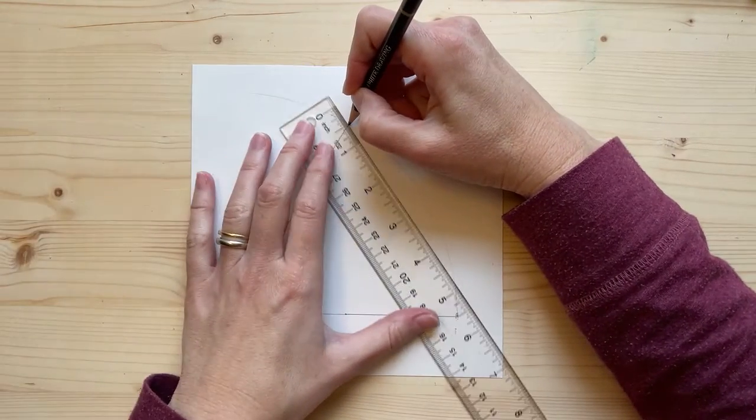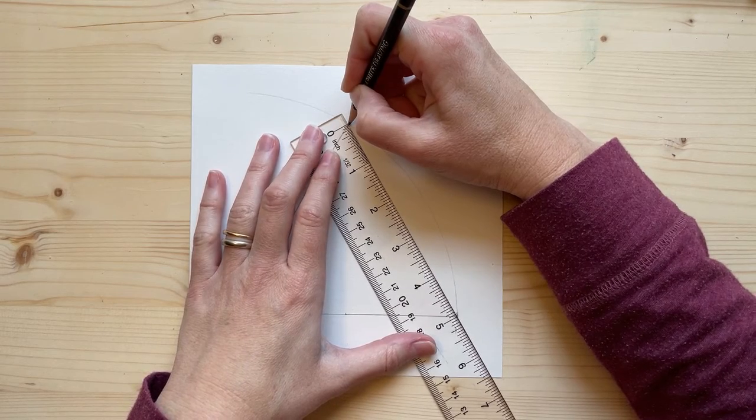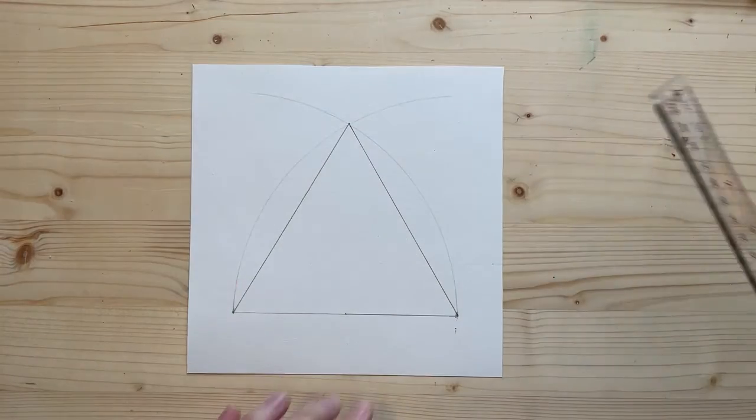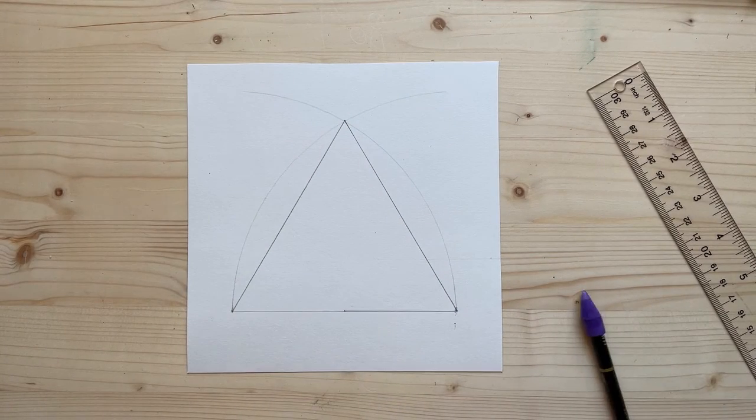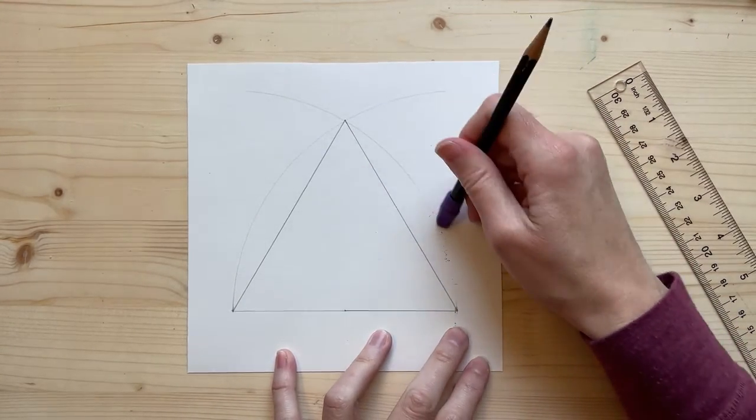So then you just do the same thing on the other side. And that line should be 5 inches. And that is how you make an equilateral triangle with a compass. You can go back now and erase that arch line.